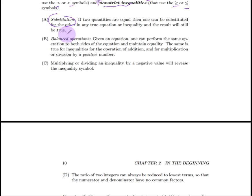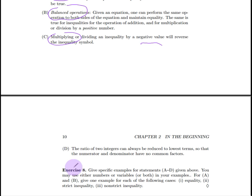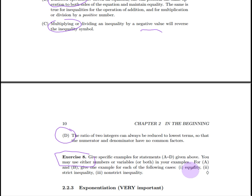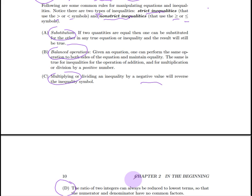Now, here are some rules that can be used to transform equations to make them more simple. Substitution. Very common technique in simplifying equations. Balanced operations. Basically, doing the same thing to both sides. In some cases, if you multiply or divide by a negative value, you're going to change the inequality. It doesn't matter for the equality. And here, we talk about reducing fractions. That's something else that can be done. In exercise eight, you're supposed to give specific examples for each statement above. For parts A and B, give one example for equality, one for strict inequality, and one for non-strict inequality. For instance, part A.